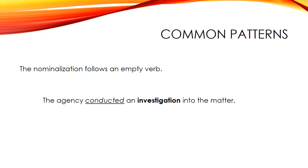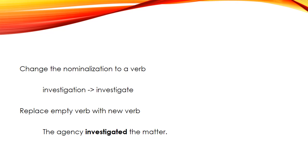Another common pattern: a nominalization follows an empty verb — one that doesn't express a real action but isn't simply 'to be.' Example: 'The agency conducted an investigation into the matter.' 'Investigation' is the abstract noun, and 'conducted' is the empty verb. Unless you're conducting a symphony orchestra, 'to conduct something' is a vague verb that doesn't give us a clear picture. The fix is simple: change the nominalization to a verb — 'investigation' becomes 'investigate' — and replace the empty verb: 'The agency investigated the matter.' Much more concise and direct.